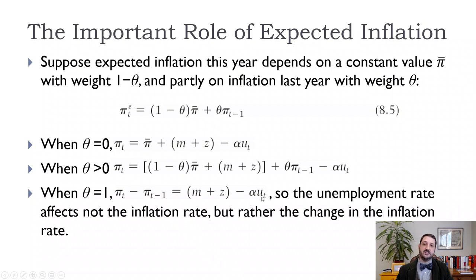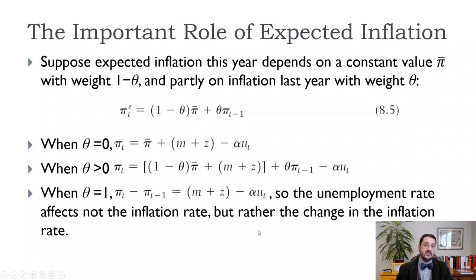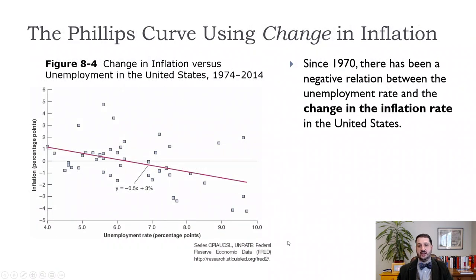We still have a constant and a slope times u_t — a nice linear relationship in our Phillips curve — and we can take that to the data to see if the relationship holds. The answer is yes: it looks about as good as the original Phillips curve did. We have a constant, and then the slope on the unemployment rate.